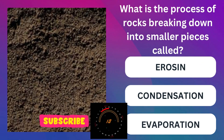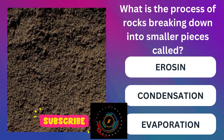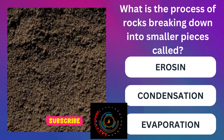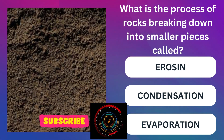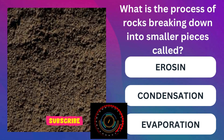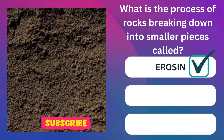What is the process of rocks breaking down into smaller pieces called? Options are aerosin, condensation, evaporation. The correct answer is aerosin.